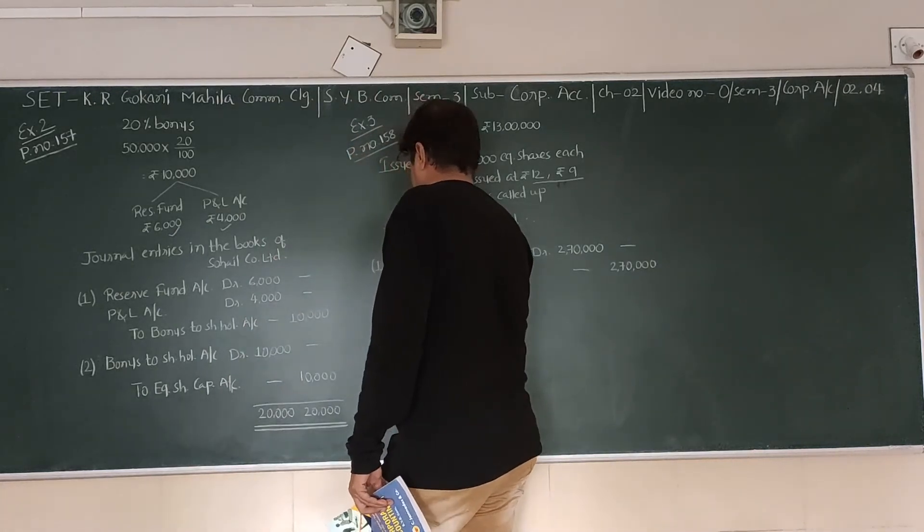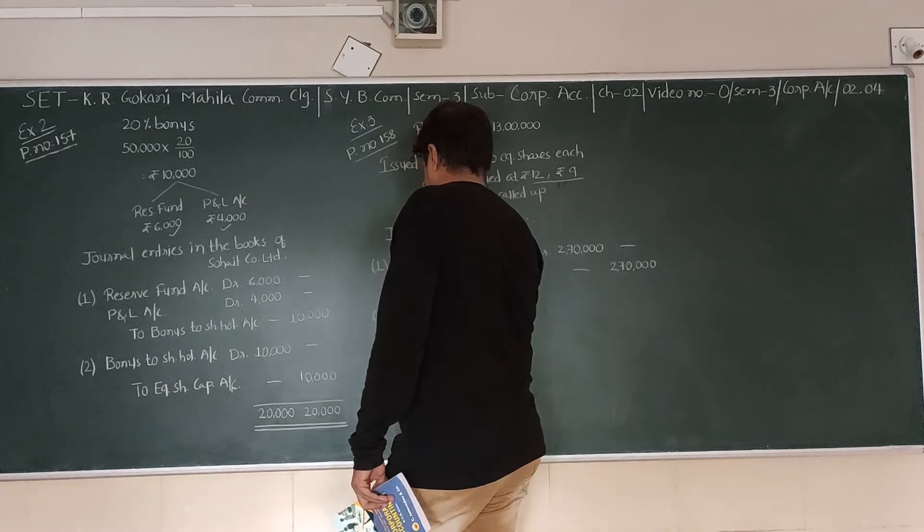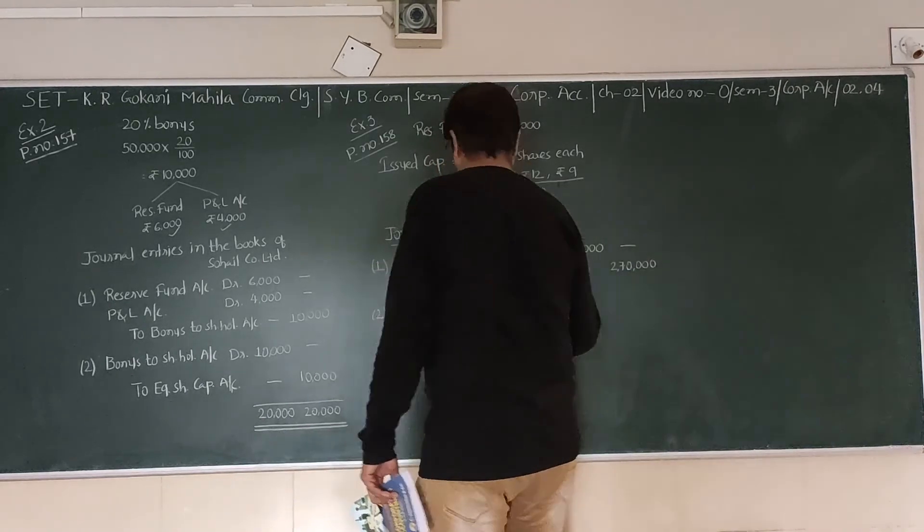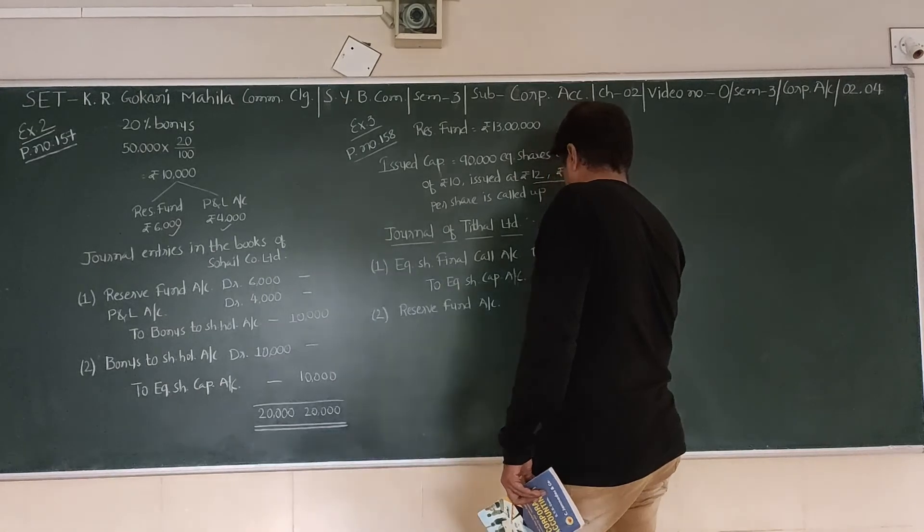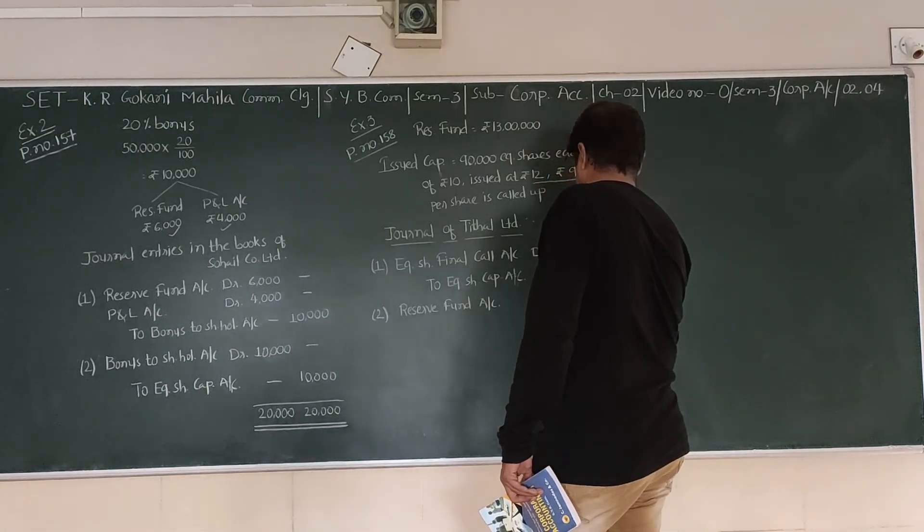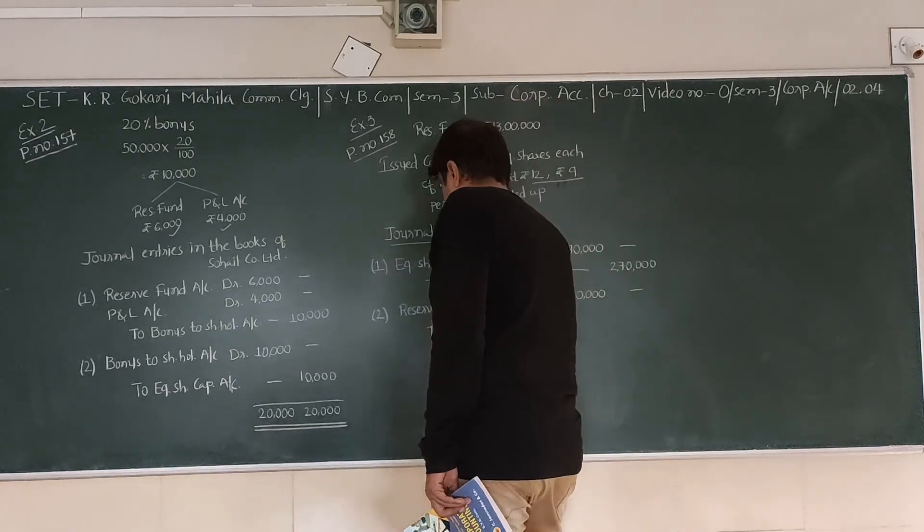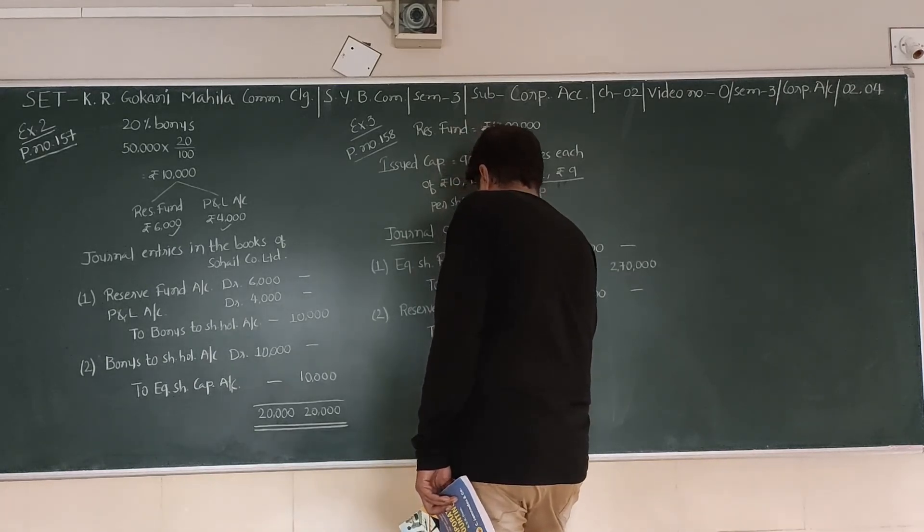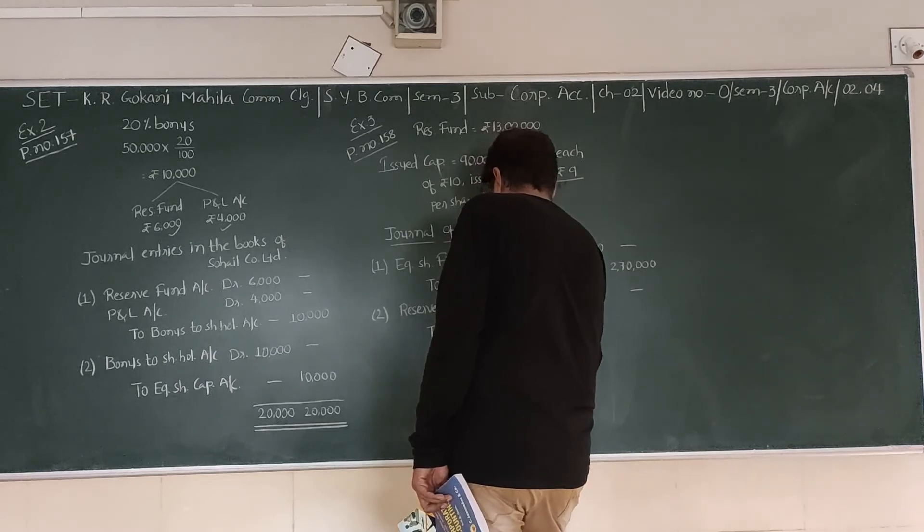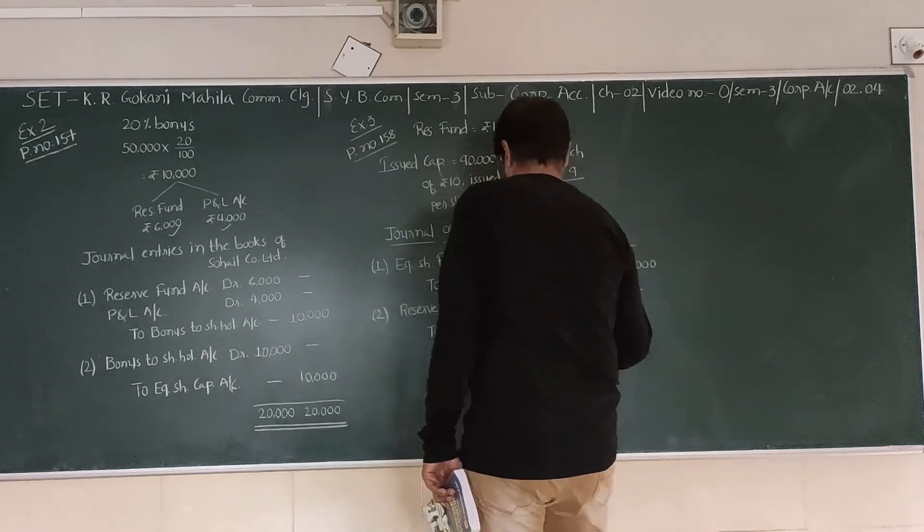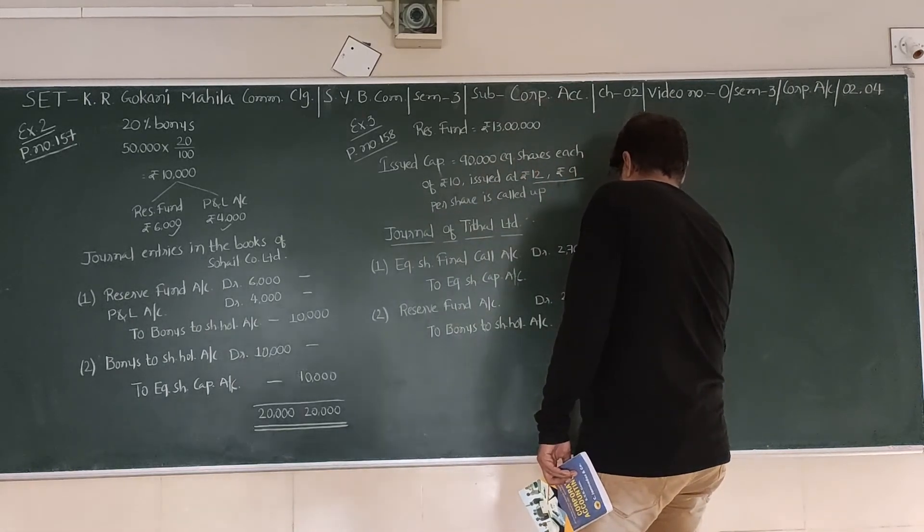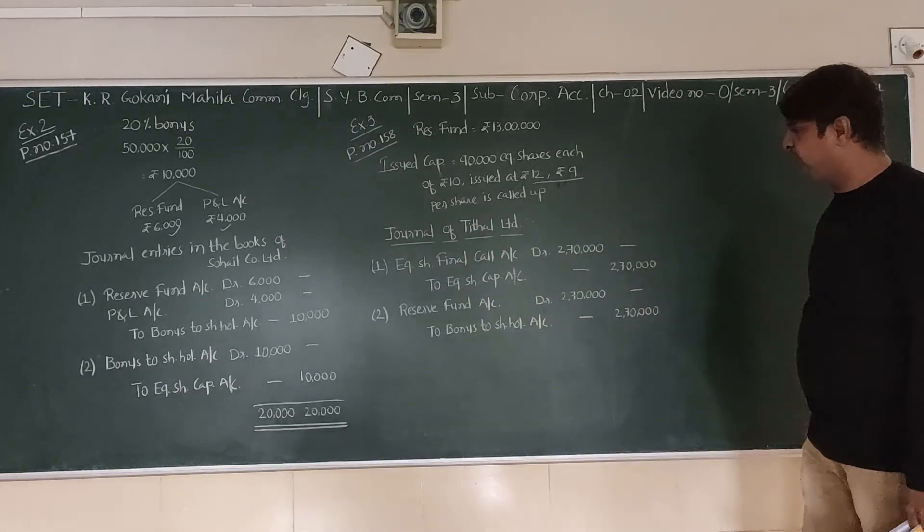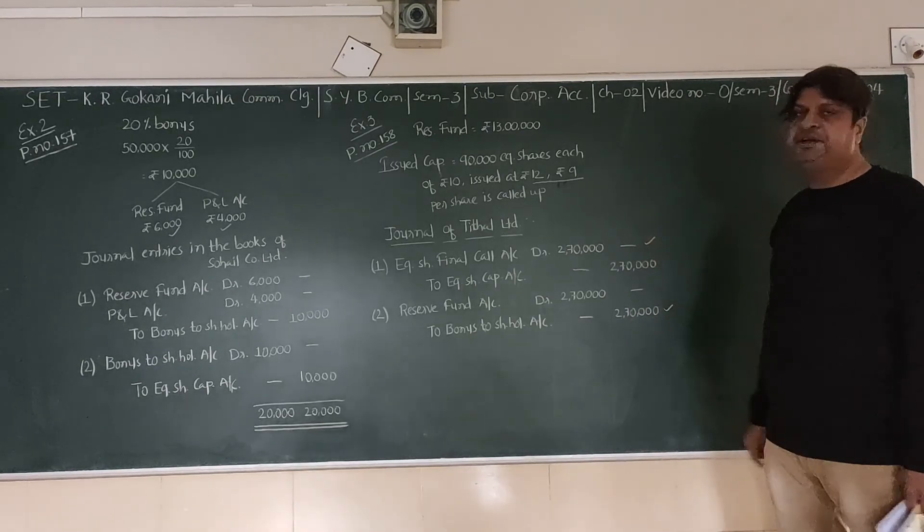Now we need to provide the necessary amount of 2,70,000 from the Reserve Fund. So our second entry will be Reserve Fund account debit 2,70,000 to Bonus to Shareholders account credit 2,70,000.